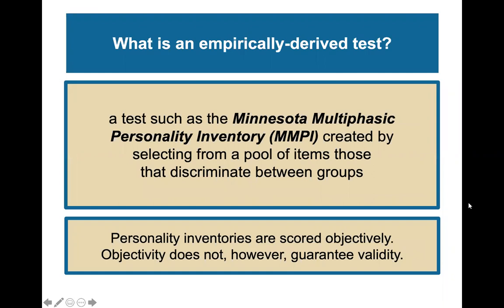What do we mean by an empirically derived test? The MMPI was created by selecting from a pool of items those that discriminate between groups. Personality inventories are scored objectively; however, we have to remember that objectivity doesn't actually guarantee validity — that the test is measuring what it purports to measure. Those aren't the same thing, so while it's scored objectively, we still have to question the validity.